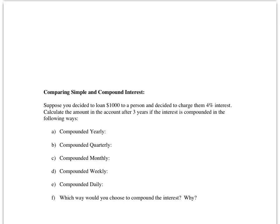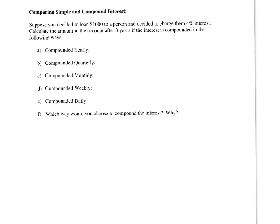This is an example that I want you to do on your own. Suppose you decide to loan $1,000 to a person and decide to charge them 4% interest. Calculate the amount in the account after three years if the interest is compounded in the following ways. You're going to do five different calculations with these numbers: N equal to 1 for compounded yearly, N equal to 4 for compounded quarterly, N equal to 12 for compounded monthly, N equal to 52 for compounded weekly, and N equal to 365 for compounded daily. Then write a little paragraph about which way you would choose to compound that interest after doing all those calculations and why.